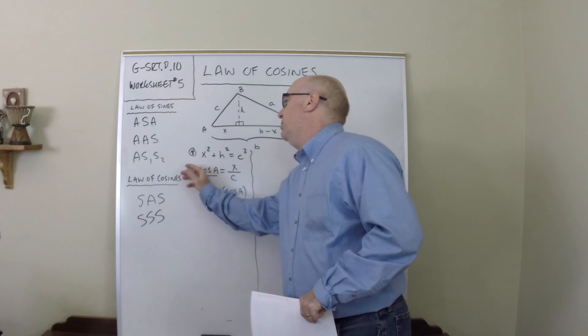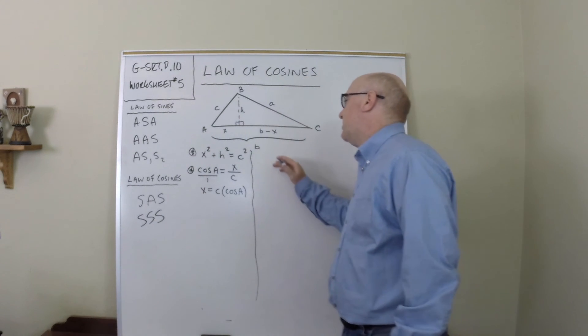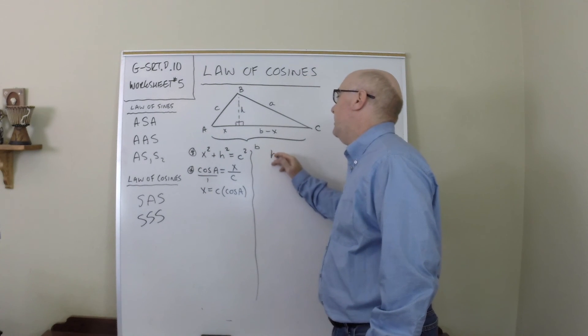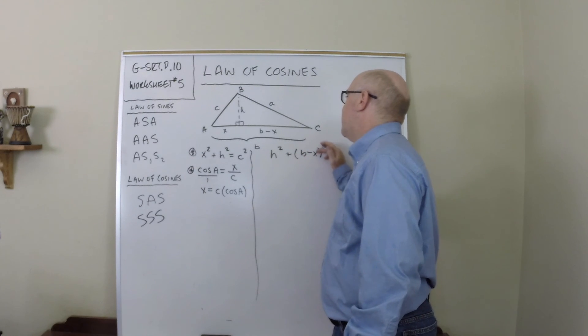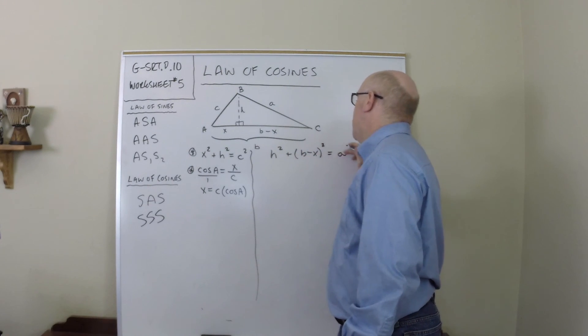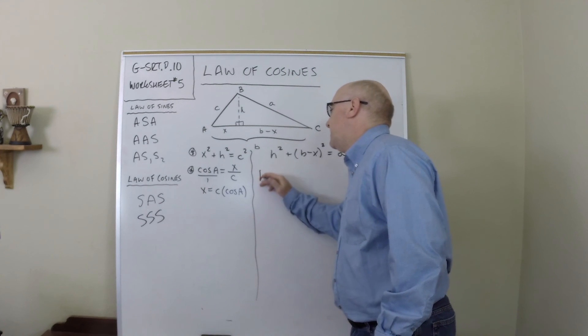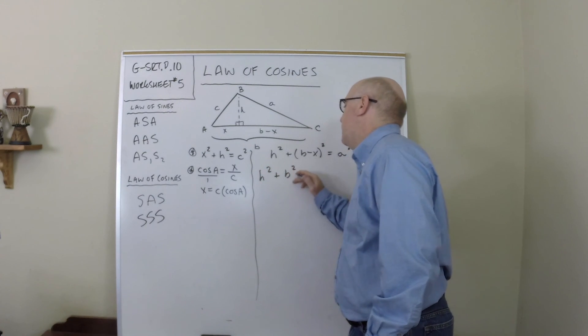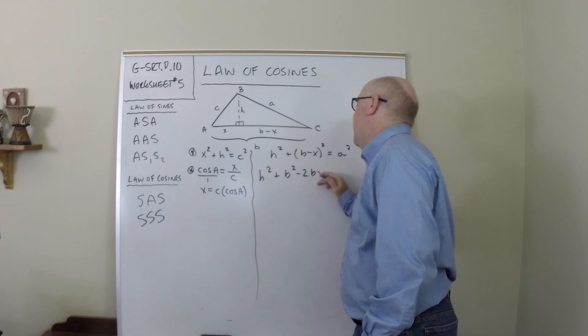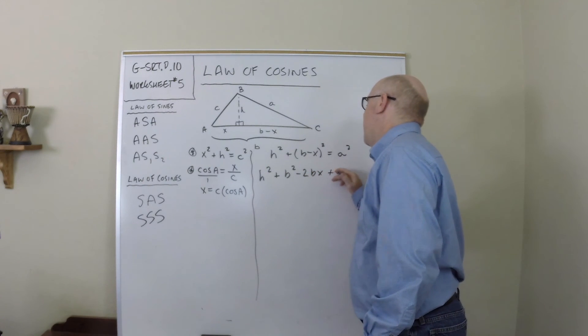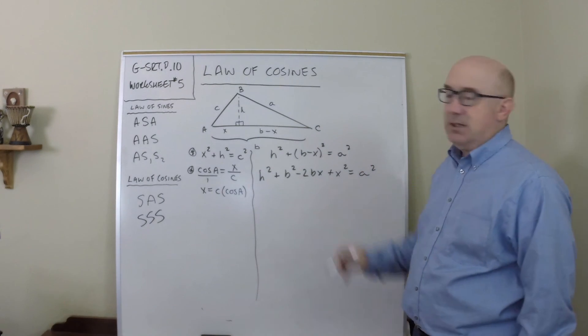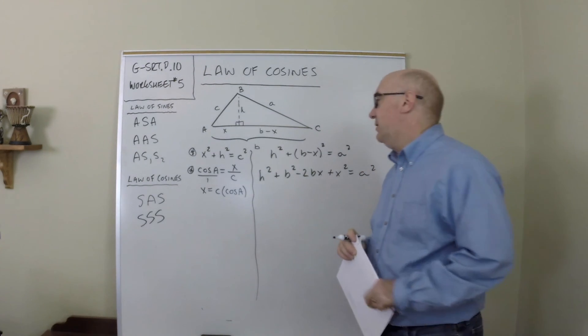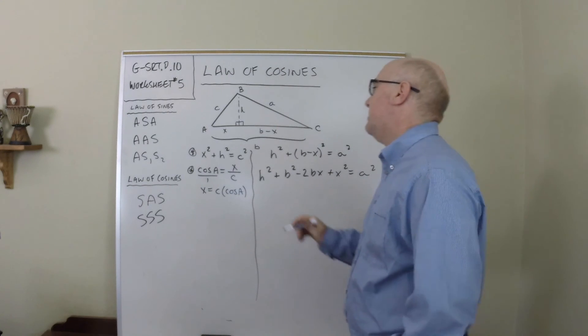I'm going to go over to the right side and also set up a Pythagorean relationship. h squared plus (b minus x) all squared equals a squared. I'm going to expand that out so I would get h squared plus b squared minus 2bx plus x squared equals a squared. This doesn't look like we're heading in the right direction, but we can start to do some substitution.